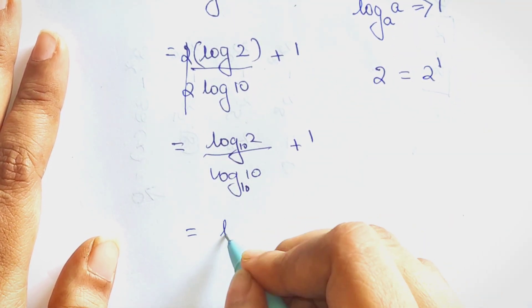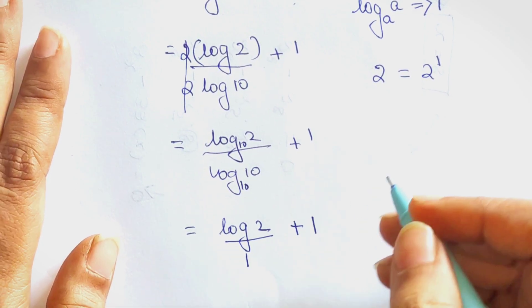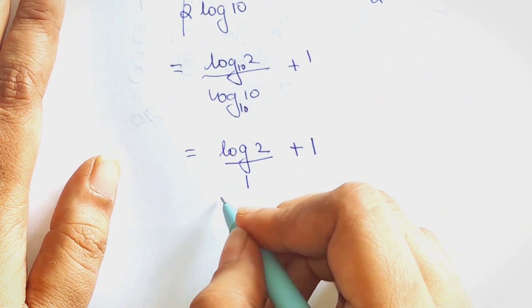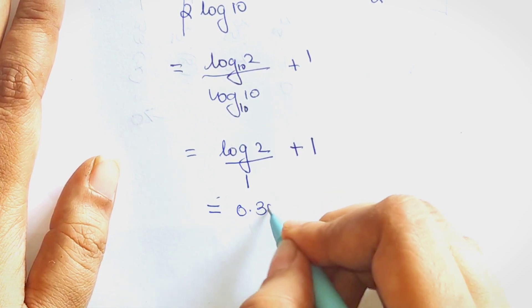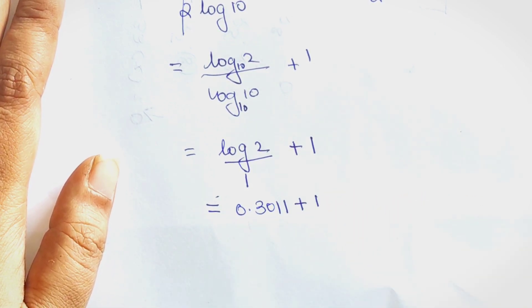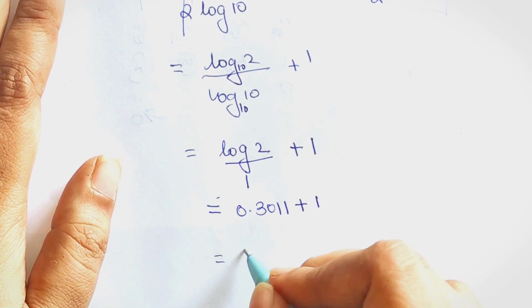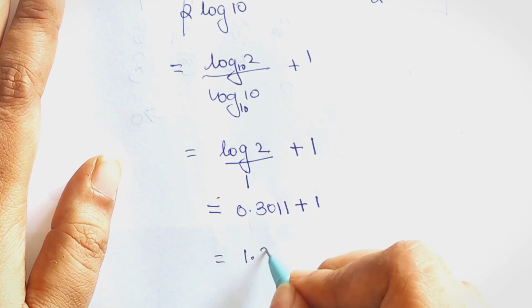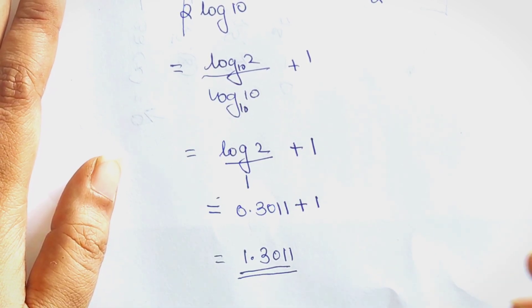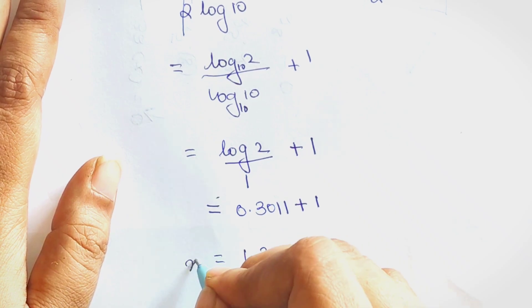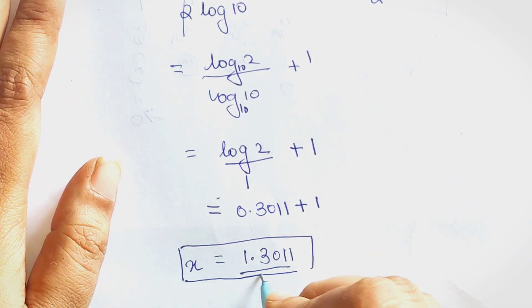So this becomes log 2 upon 1, plus 1, which gives us log 2 equals 0.3010, plus 1. The final answer is x equals 1.3010. The value of x is 1.3010.